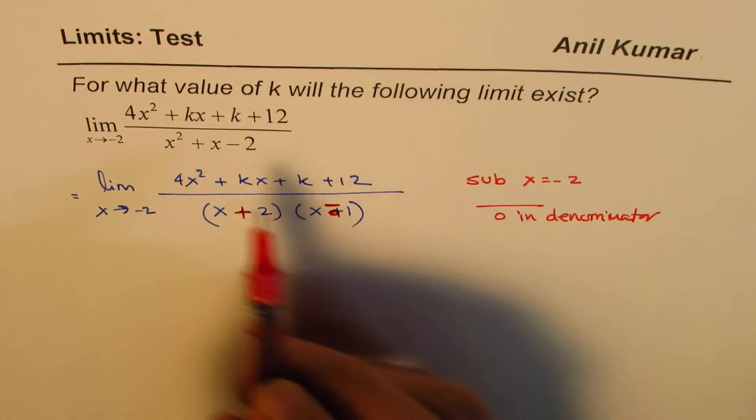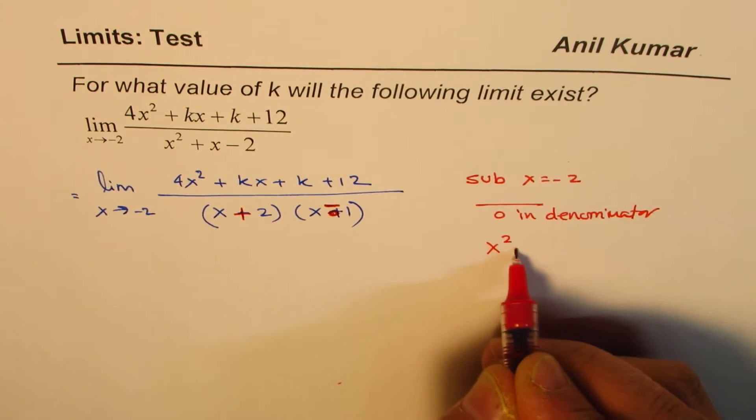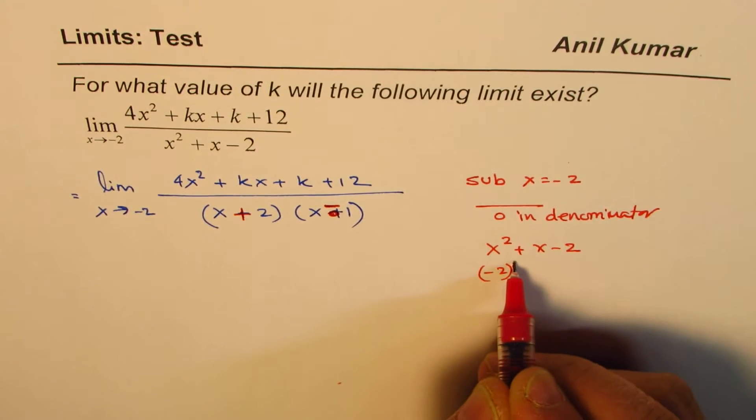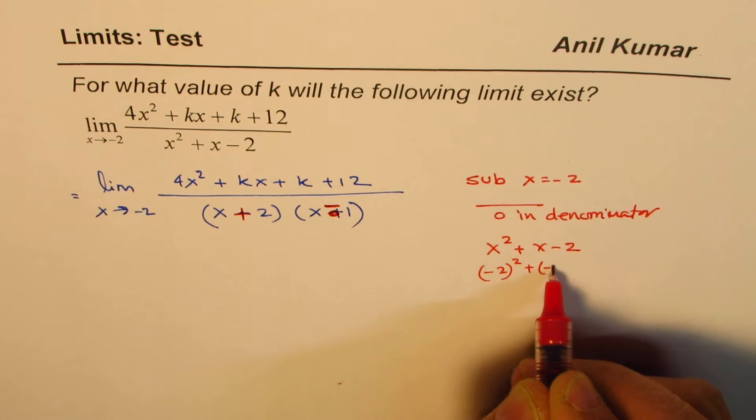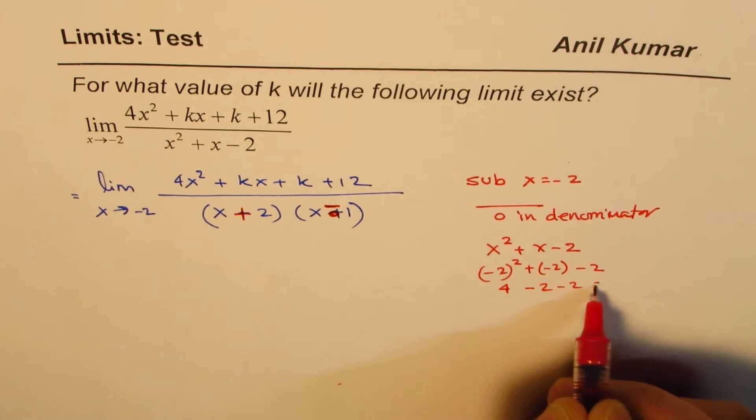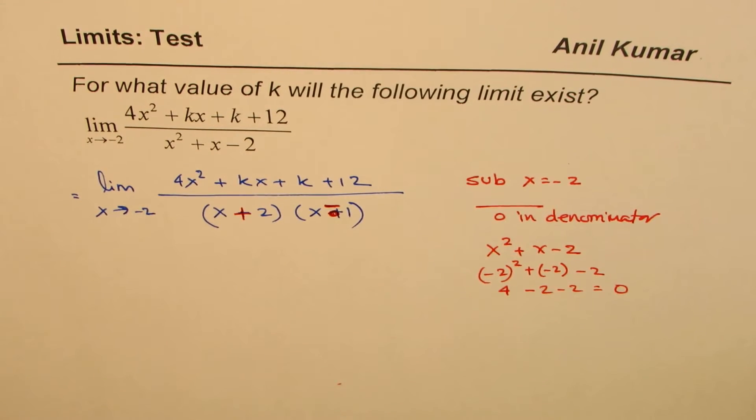You could substitute here also, x² plus x minus 2. So even in this original equation, if I substitute minus 2, what do I get? That is 4, minus 2 minus 2, which is 0. So denominator is 0 for x equals minus 2.